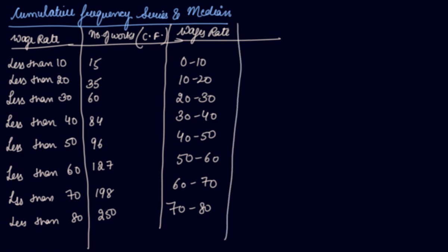Now convert the cumulative frequency into the normal frequency. So less than 10 means 0 to 10 are 15 only. From 10 to 20 include 0 to 10 and 10 to 20, here 35. Now you have to just find out for 10 to 20. So what you will do, 35 minus 15, so it will be 20.